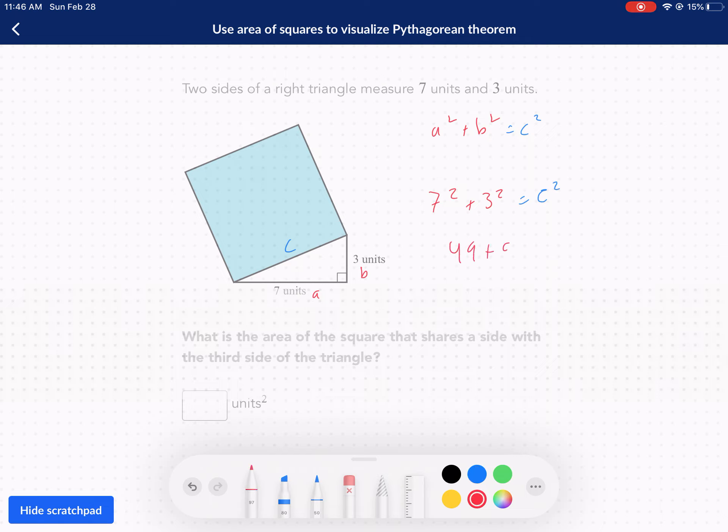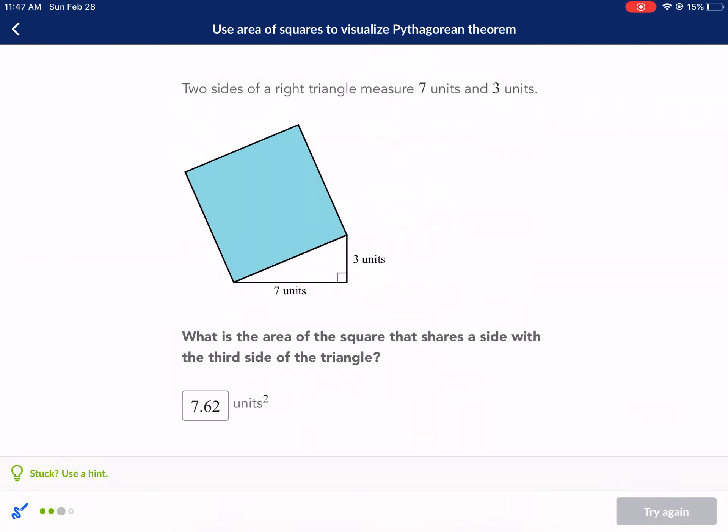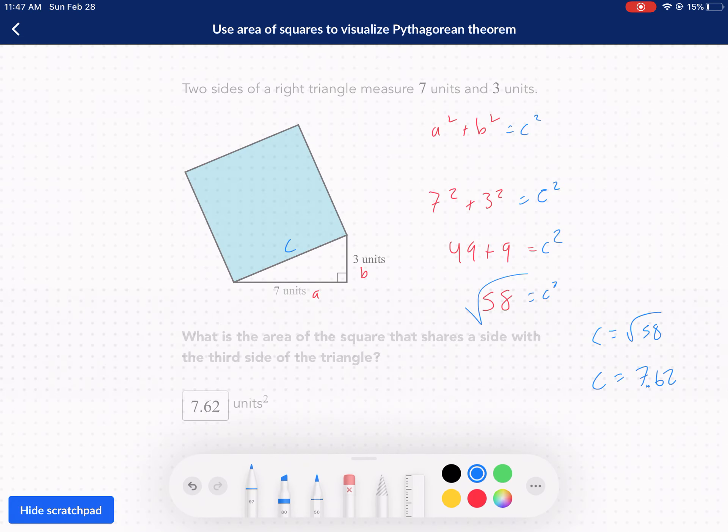That's equal to 49 plus 9. We're going to get 58 equals C squared, and we'll have to take the square root of 58. C equals the square root of 58, which equals 7.62.